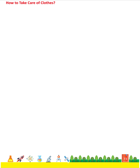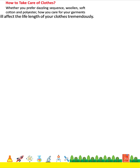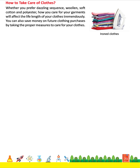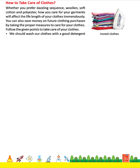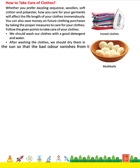How to take care of clothes? Whether you prefer dazzling sequins, woolen, soft cotton, or polyester, how you care for your garments will affect the life length of your clothes tremendously. You can also save money on future clothing purchases by taking proper measures to care for your clothes. We should wash our clothes with a good detergent and water. After washing the clothes, we should dry them in the sun so that the bad odor vanishes from the clothes.